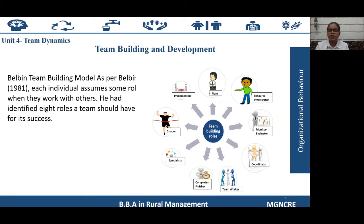To summarize: process consultation, third-party intervention, and team building are some of the interventions of group development. In process consultation, you build good relations with the client to understand events in the internal and external environment to improve the situation. In third-party intervention, arbitration, mediation, and alternative methods are used to solve conflicts. Today's organizations encourage teamwork and design their structure around team rewards to overcome severe competition in the industry.